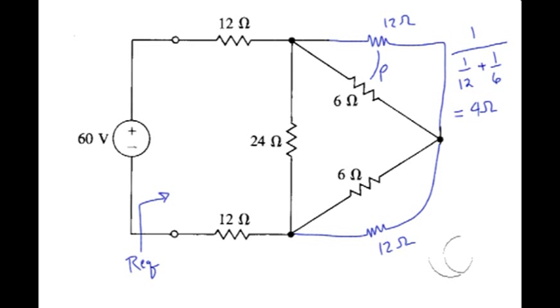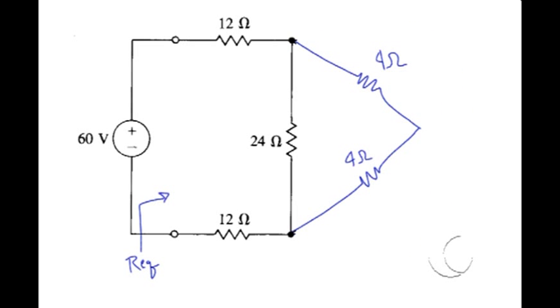Again, we've got symmetry in this circuit, so I'm going to go ahead and take care of this one at the same time. So both of those turn into an equivalent 4 ohm resistor. Now we can see that we have 4 ohm in series with 4 ohms, leaving us with an 8 ohm resistor.